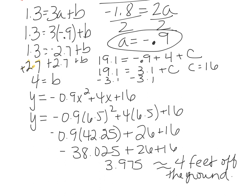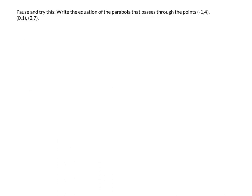Here is a problem for you to pause and try. Write the equation of the parabola that passes through these three points. Pause now, write all the information in standard form, plug in your x's and y's. The easiest way to do these — since c always has a coefficient of 1 — is to first eliminate your c.